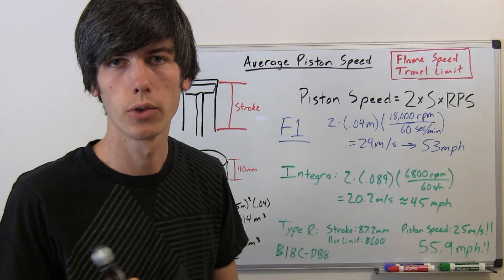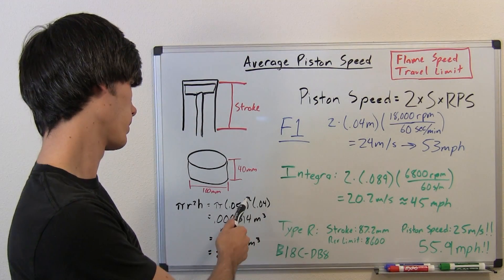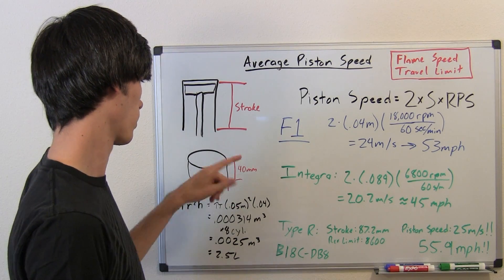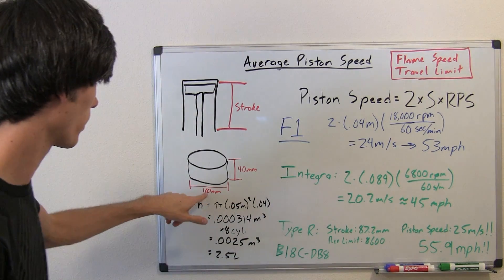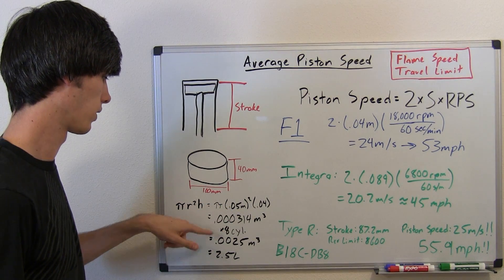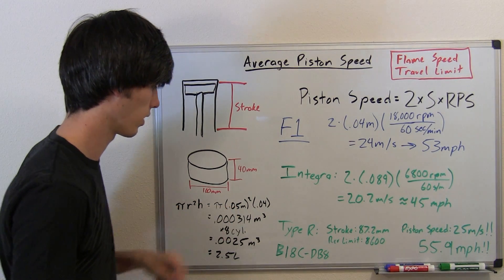Well, we know that Formula One engines are 2.4 liters, so obviously these are larger than they are supposed to be, but point is they're pretty close. A small difference, I mean, you drop one millimeter, it's going to make a pretty big difference in the overall volume because that number is squared.